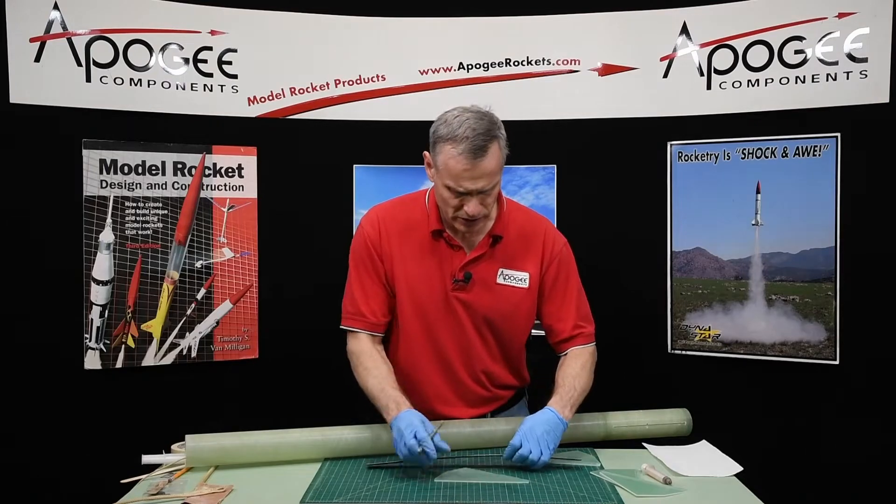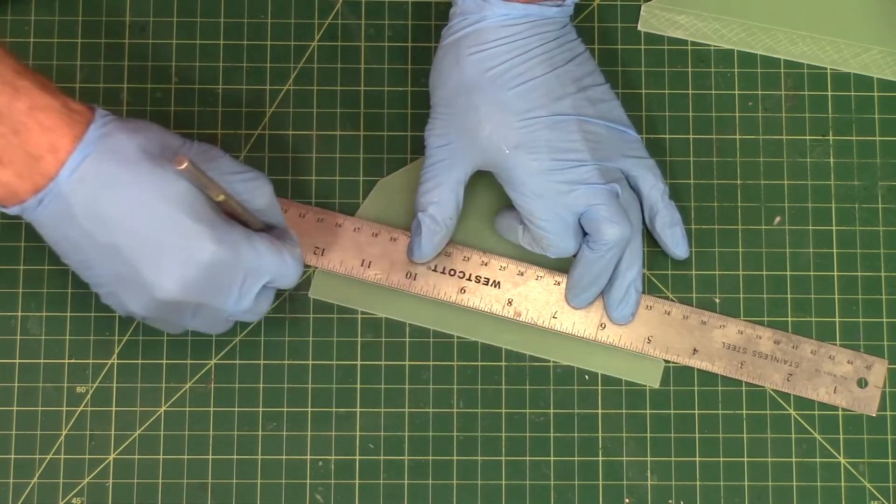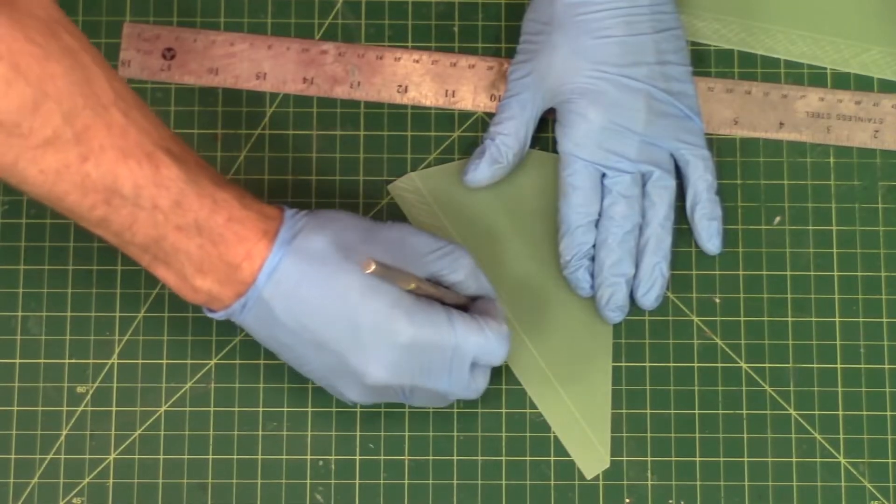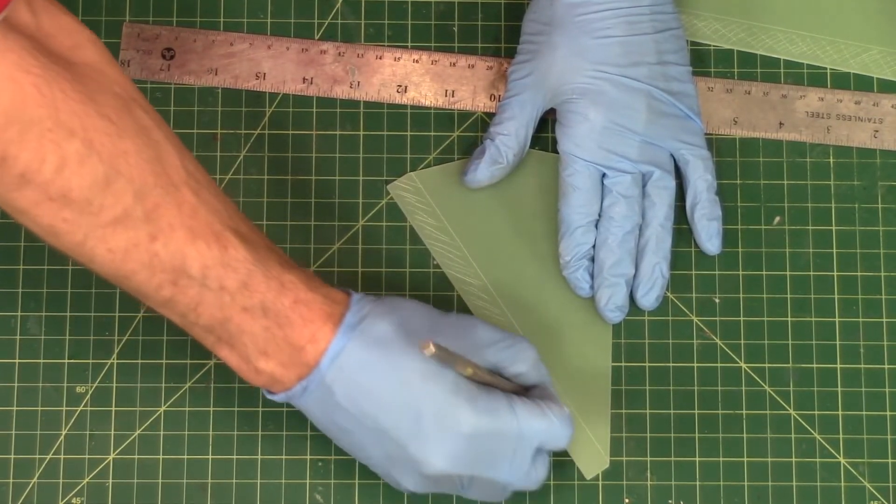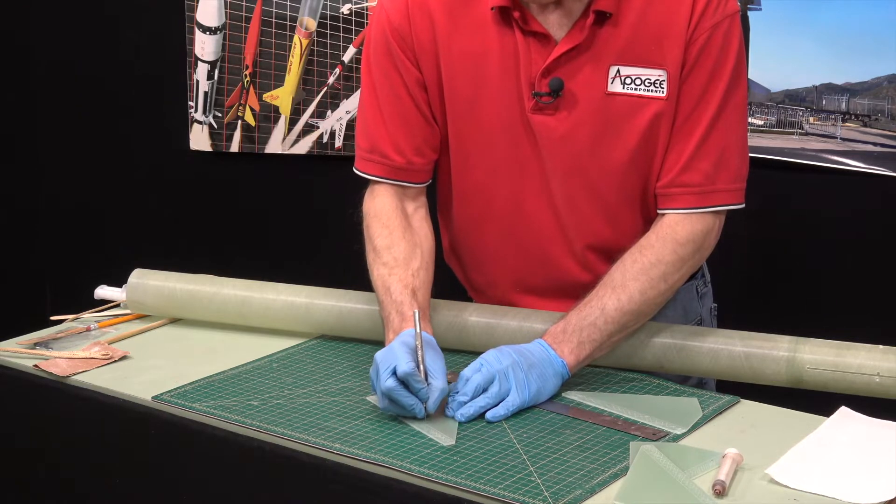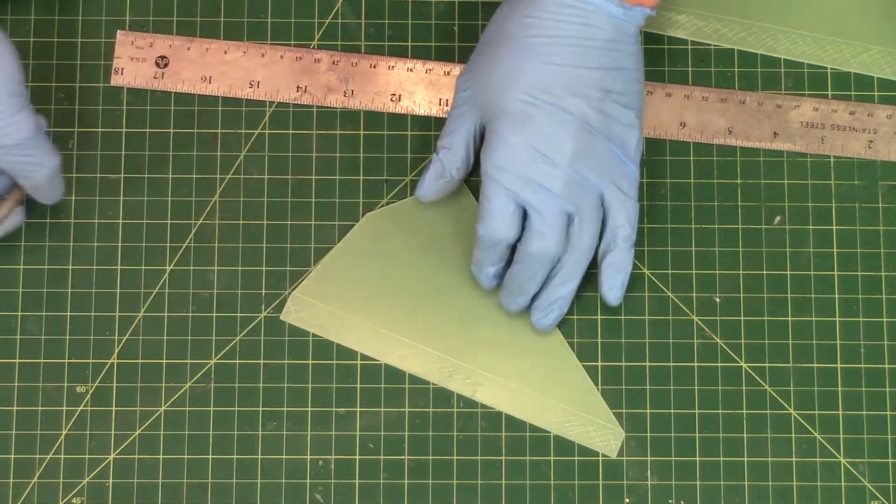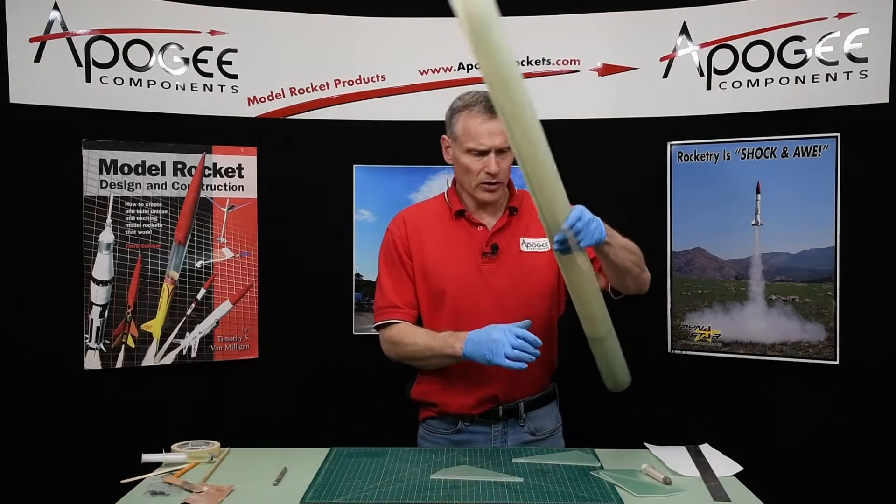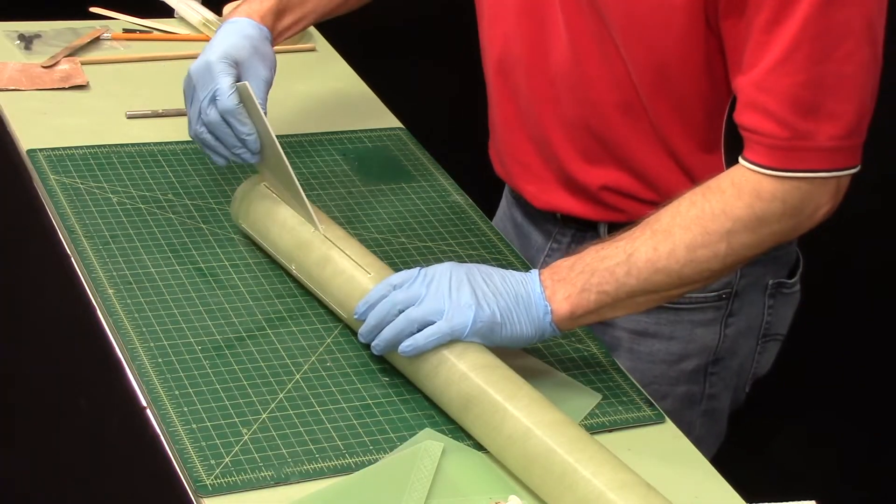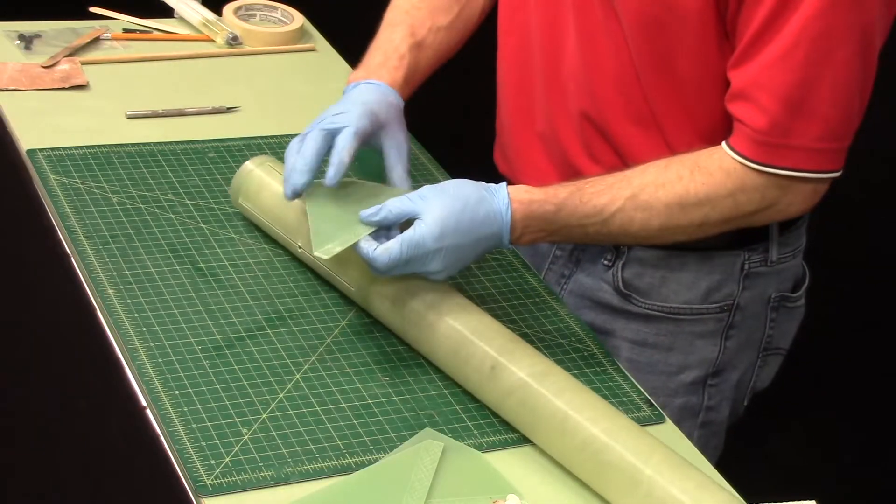You need to do both sides of all the fins. Now we need to test fit the fins into the slots. I've found plunging the front in first, getting it to the end and then trying to rotate it down seemed to work best for me.